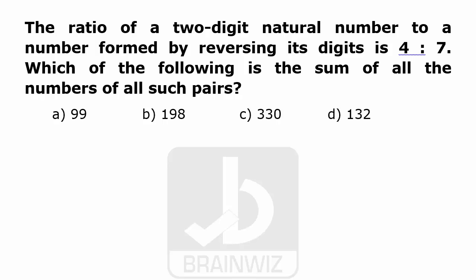Now let us take you to the second question. In this question, it is said that the ratio of a two-digit number and a number formed by reversing its digits is 4 is to 7. So we have to find out which of the following is the sum of all such pairs of numbers formed using this condition.